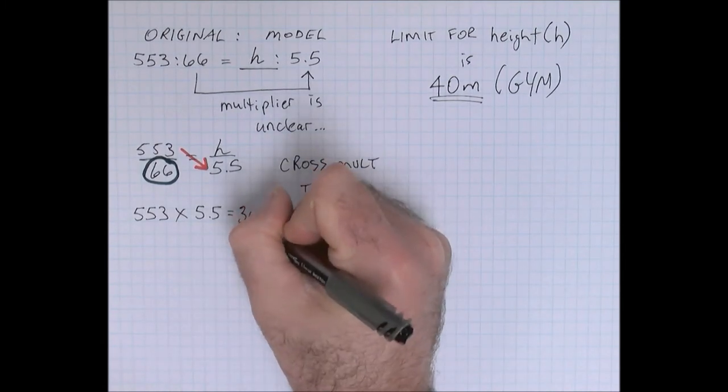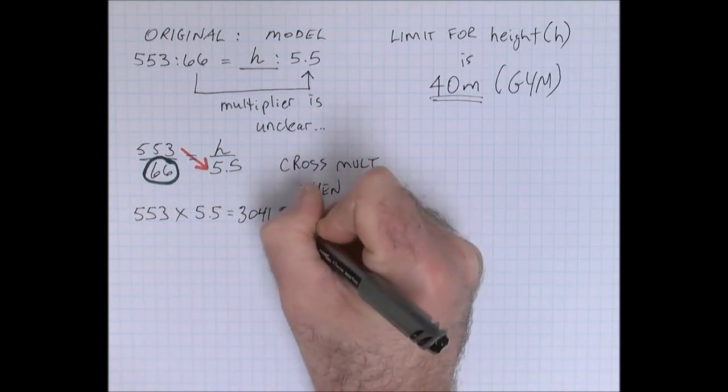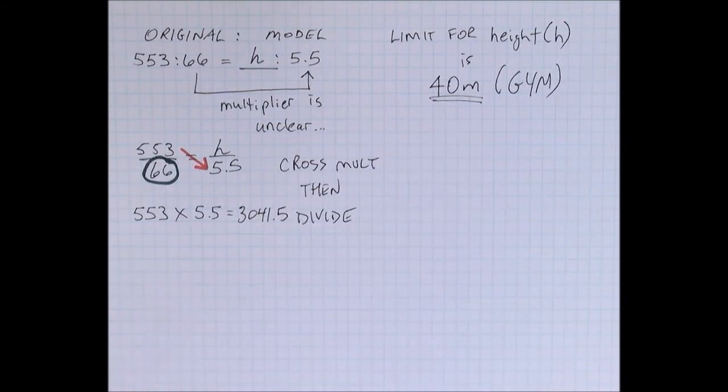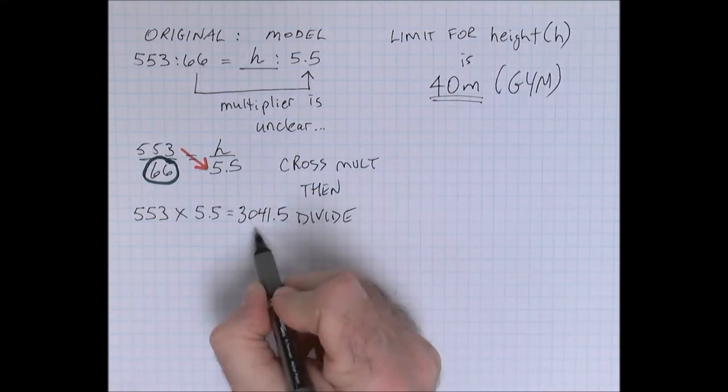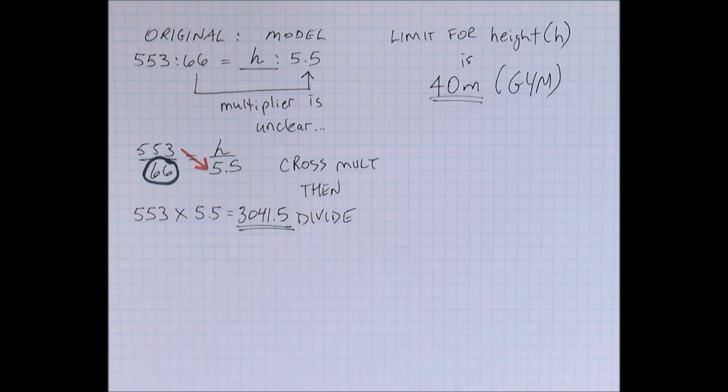that gives us a value of 3041.5. I suggest you leave that in your calculator—don't round it off yet. When we're doing problems like this, we usually leave rounding off to the very end.